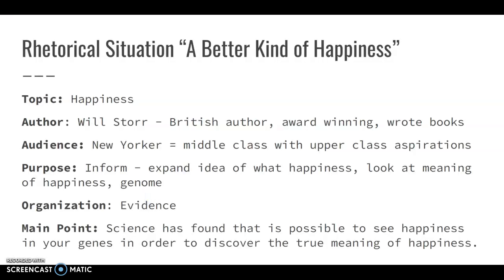The first article that we read is 'A Better Kind of Happiness' by Will Storr. These are the questions I asked you in your organizer sheet for each of the articles. I wanted to go over the answers and talk a little bit more about rhetorical situation, because this is one of the things you're going to be able to be critical of when you write your response. This article was about happiness — specifically happiness related to the human genome.